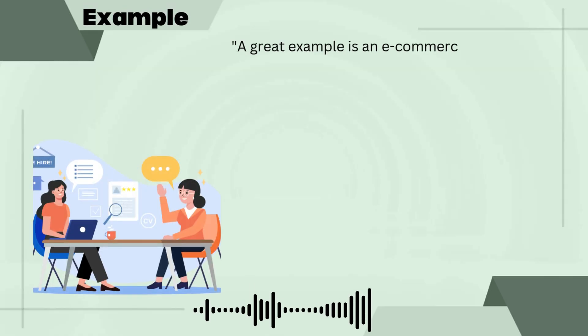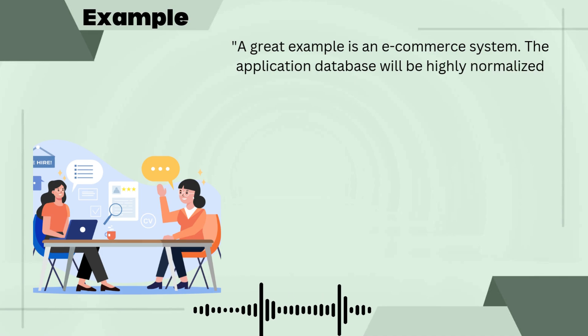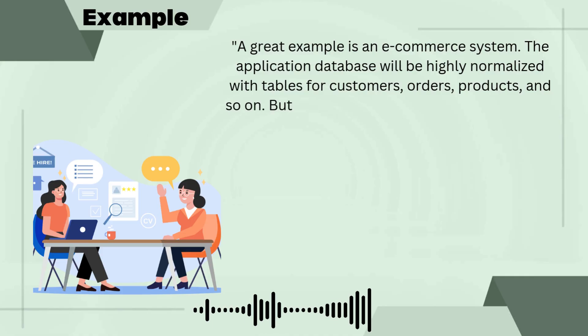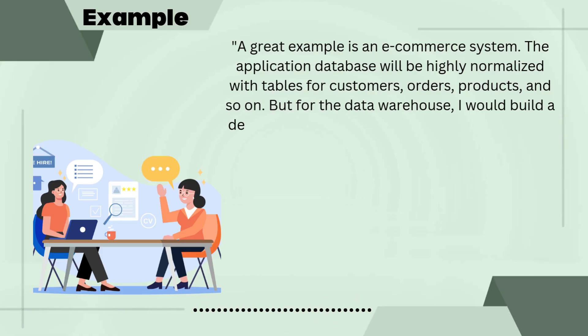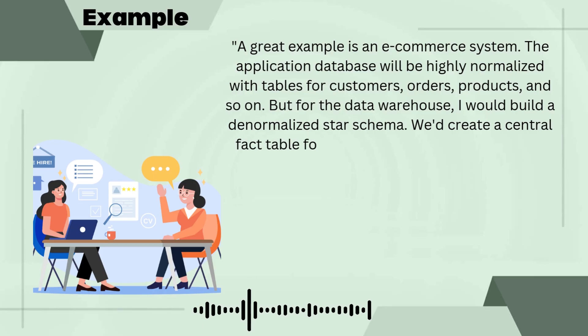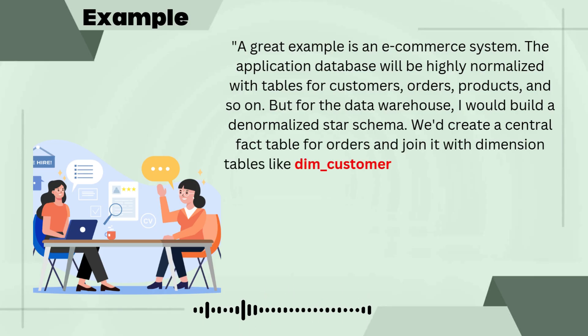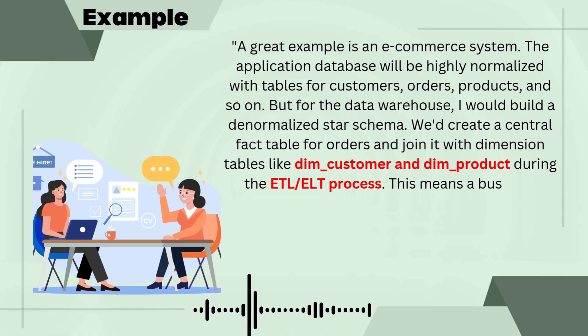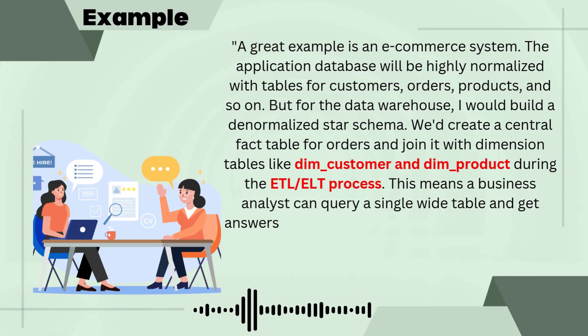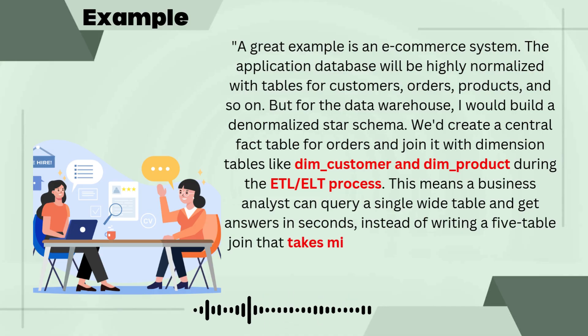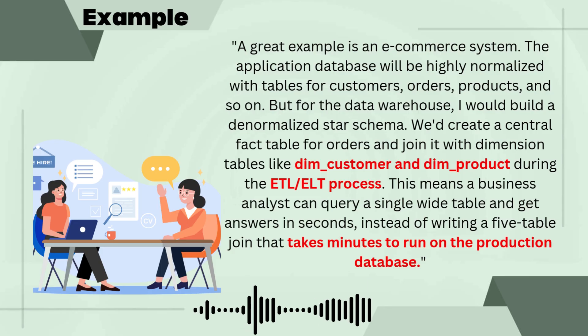For questions where you don't have a production story, try to give an example. A great example is an e-commerce system. The application database will be highly normalized with separate tables for customers, orders, products, and so on. But for the data warehouse, I would build a denormalized star schema — a central fact table for orders joined with dimension tables like dim_customer and dim_product. During ETL and ELT, this means a business analyst can query a single wide table and get answers in seconds instead of writing a 5-table join that takes minutes on the production database.